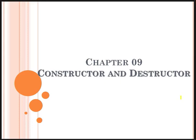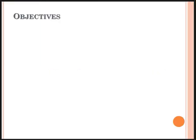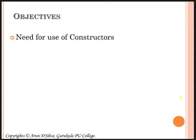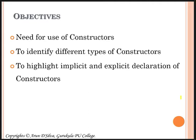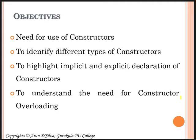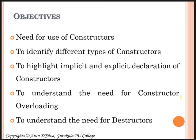Let me present the objectives of this chapter. The first one is the need for use of constructors. The second one is to identify different types of constructors. The third one is to highlight implicit and explicit declaration of constructors. The next one is to understand the need for constructor overloading, and the last one is to understand the need for destructor.